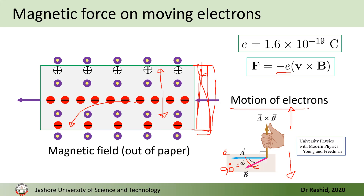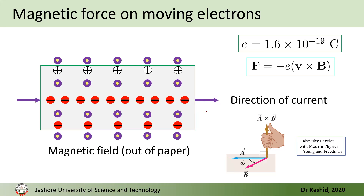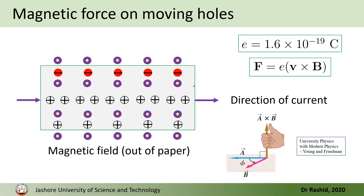Instead of showing the direction of electron motion, let's show the direction of the current — we just flip the direction. On the other hand, in semiconductors we have both electrons and holes. In p-type material, holes are the majority carriers, and in n-type material, electrons are the majority carriers. If holes are the majority carriers, the direction of the potential will be opposite, because in that case there is no negative sign to flip the direction.